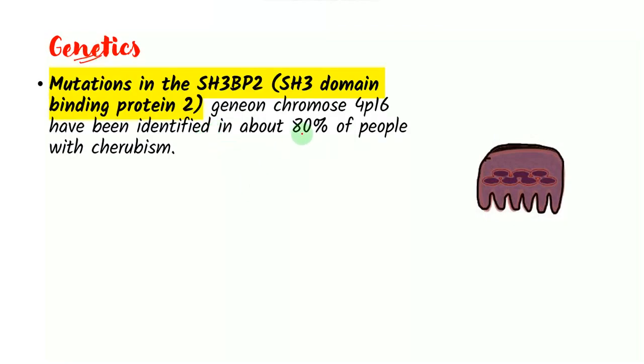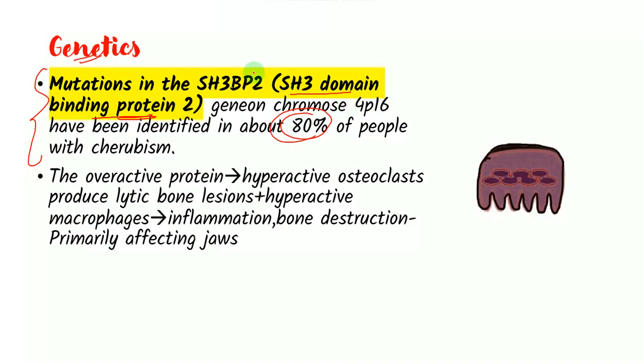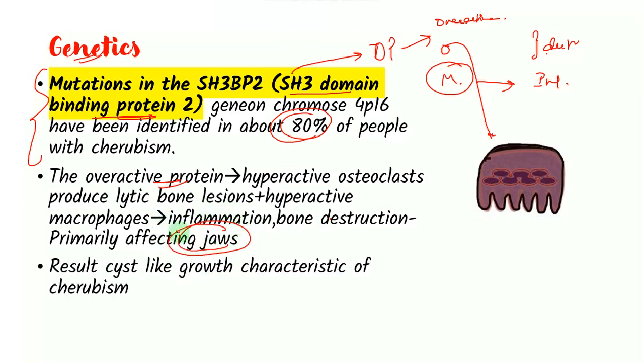Genetically, if you go into its etiology, 80% of people show mutations in SH3 domain binding protein 2. So it has a hereditary basis in 80% of the people. In another 20%, it might arise spontaneously. Now what happens here is that this gene results in the production of an overactive protein which results in the production of overactive or hyperactive osteoclasts and macrophages. So you know osteoclasts are bone-resorbing cells, so they cause bone destruction, while macrophages are involved in inflammation. So destruction and inflammation. So the overactive protein caused by mutation in the gene causes inflammation and bone destruction primarily targeted at the jaws. This results radiographically in cyst-like growth patterns. So we will study this as we progress.